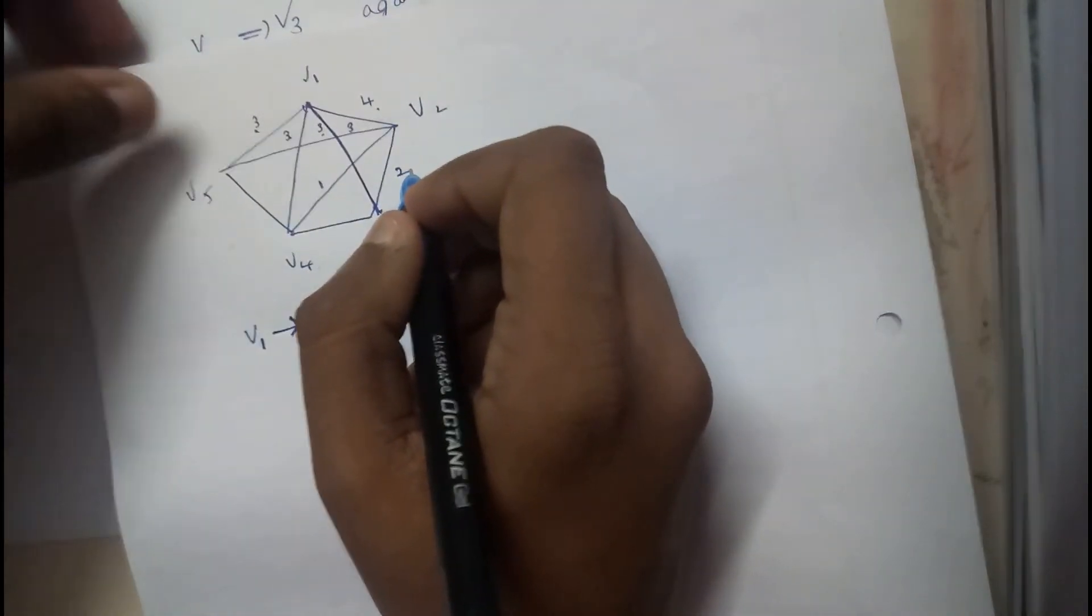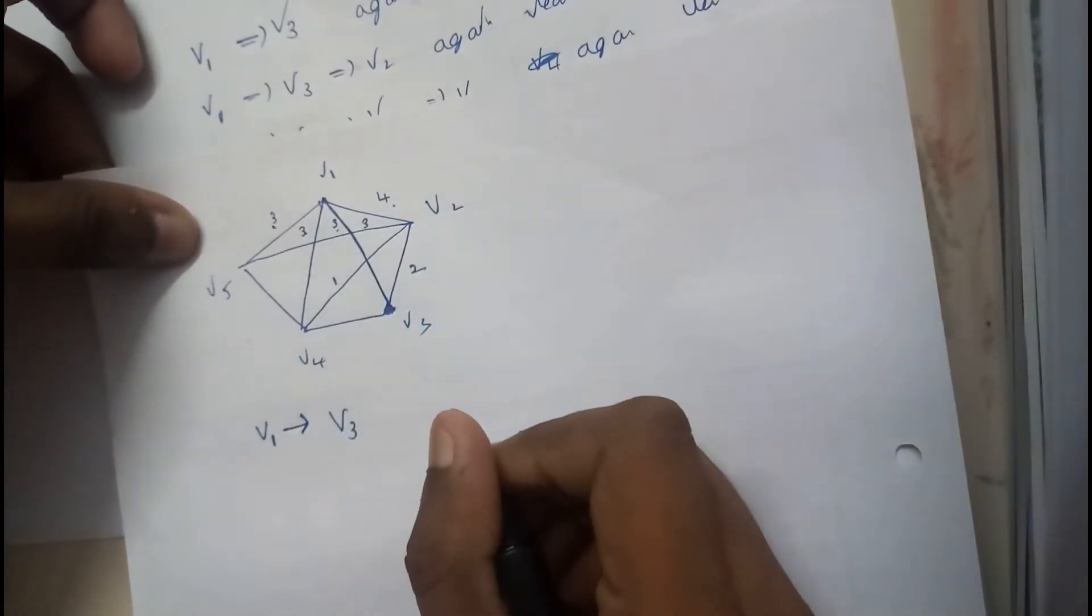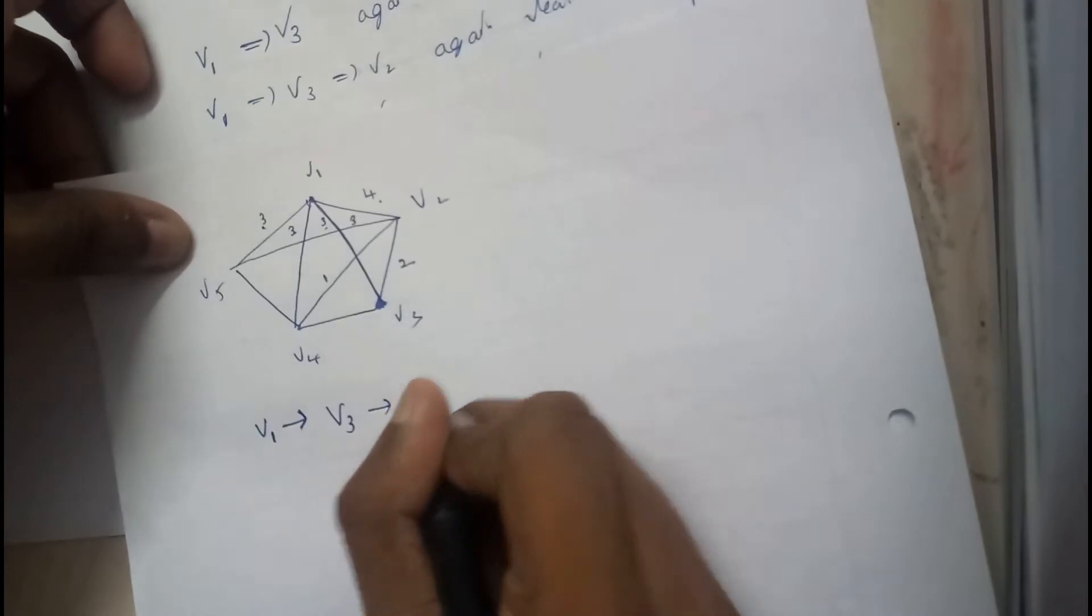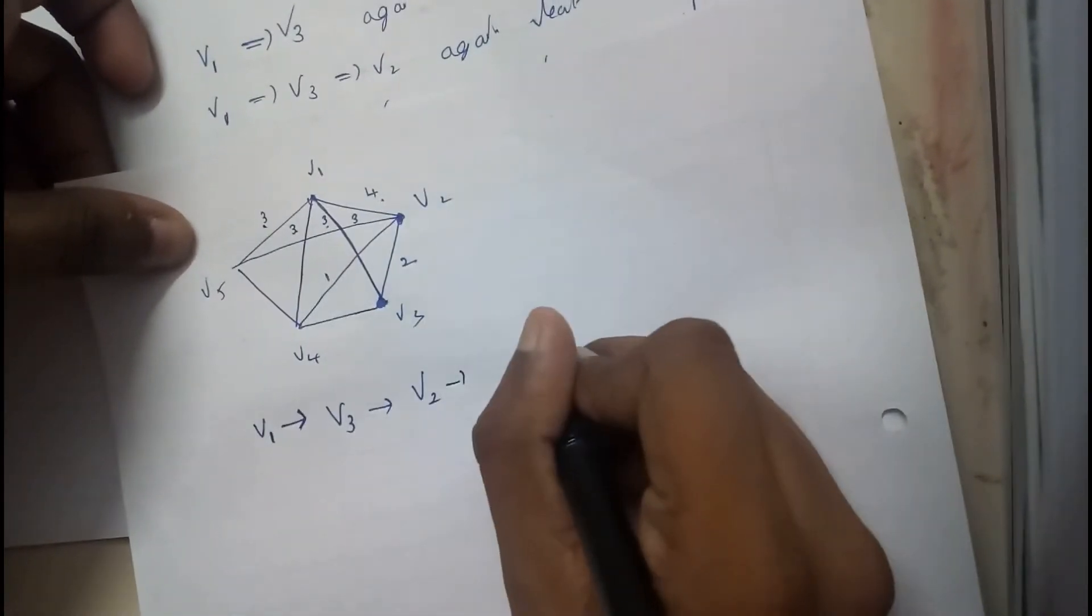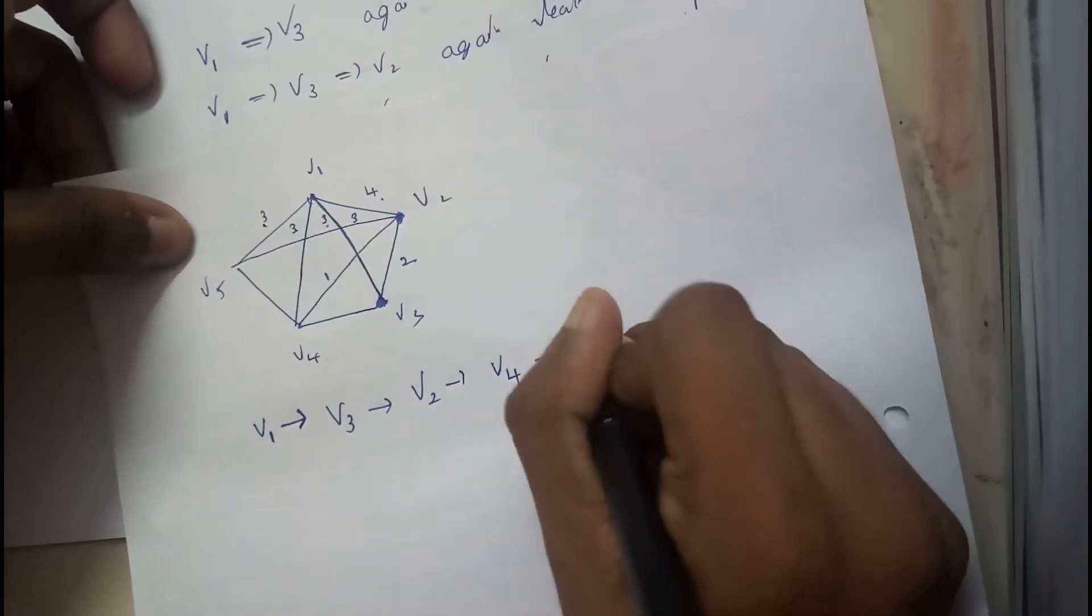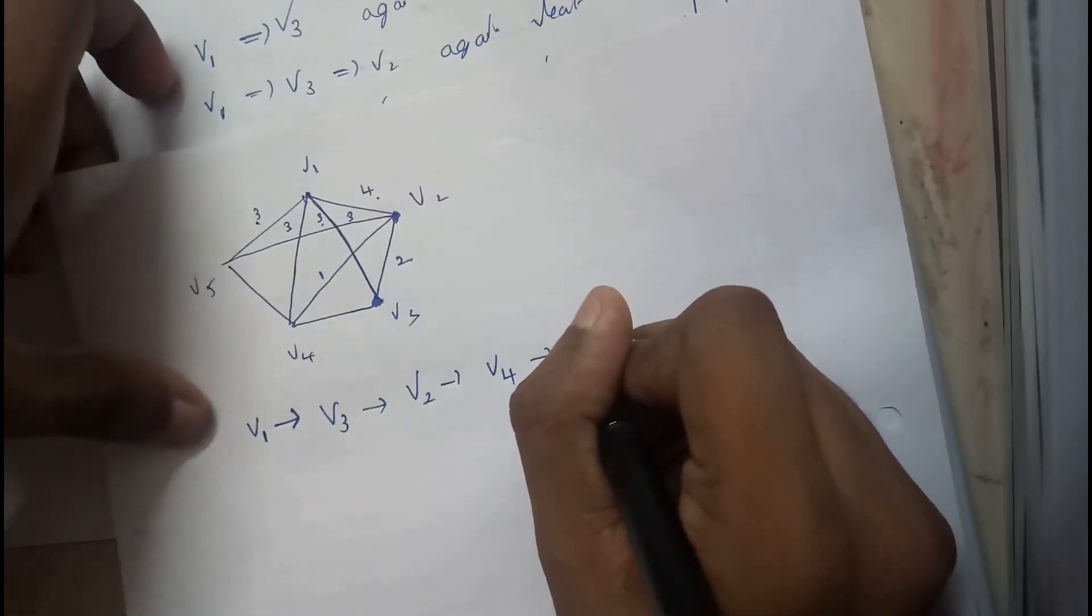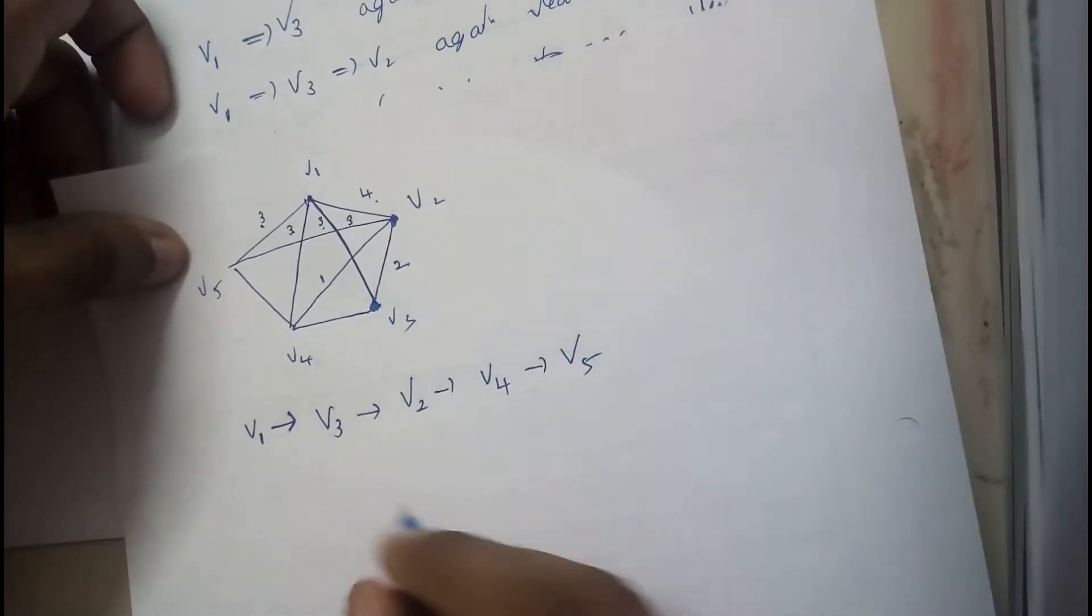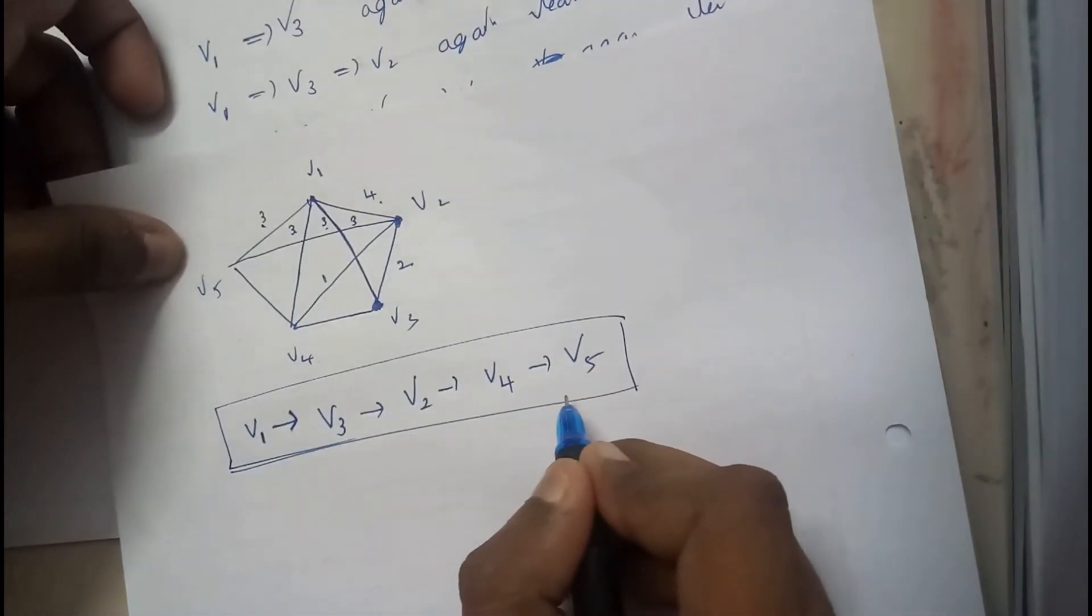So let's continue further. I have told you, we need to continue now from V3. V3 to the least one will be V2. Now V2 to the least one, that will be V4. V4 to the least one, V1 is already occupied, so the left one is V5. That's it. You have visited all the vertices.